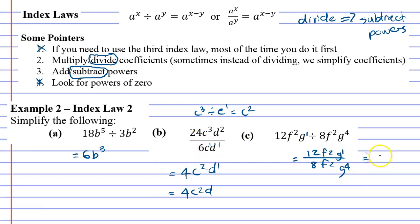12 over 8 can be simplified. I'll actually do it up here. 12 over 8, you can halve it. Half of 12 is 6 and half of 8 is 4. You can halve it again. Half of 6 is 3 and half of 4 is 2. So 12 over 8 when simplified is 3 over 2.